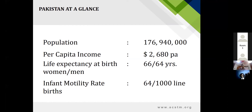Now, in the Pakistani perspective, what is the population? Pakistan's population is around 200 million. Per capita income is around 2,700 US dollars per annum. Life expectancy for both male and female is around 64 years. Infant mortality rate is 64 per 1,000 live births.